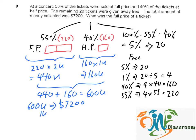So, 1 unit would be 7,200 divided by 600 equals 12 dollars. And the full price is 2 units. So, 2 units equals 2 times 12, which is 24 dollars.